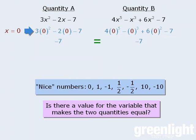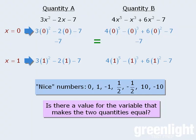So what number should we plug in next? Well, if we plug in 1, we get the following, and when we evaluate each quantity, we get negative 6 and 2, in which case quantity B is greater than quantity A. So since we get two conflicting results here, the answer must be D. The relationship cannot be determined from the given information.